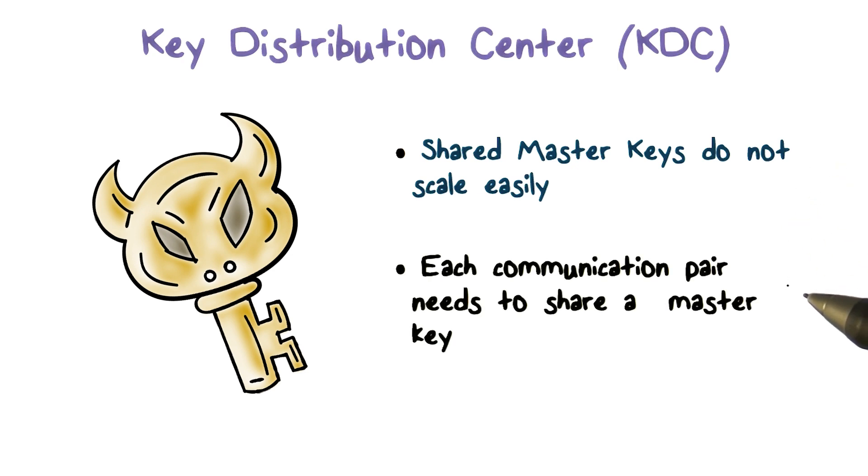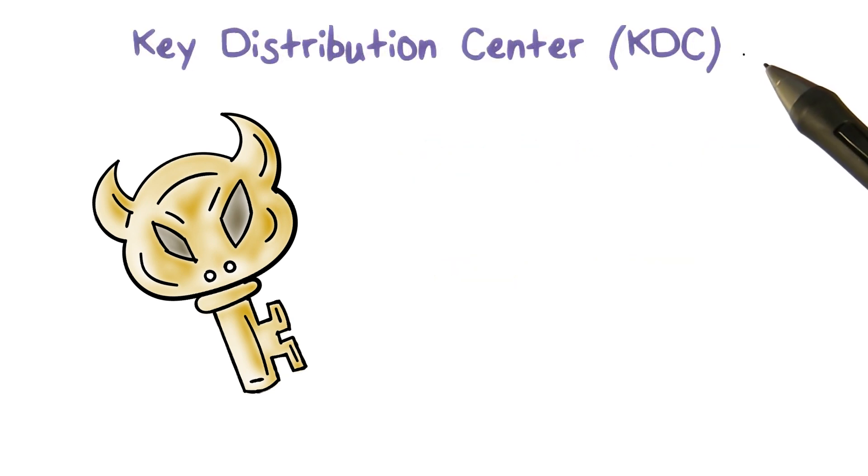Alice needs to share a master key with Bob and then another master key with Carol and so on and so forth. Using a key distribution center or KDC can solve this scalability problem.